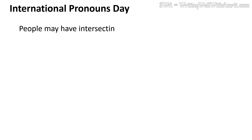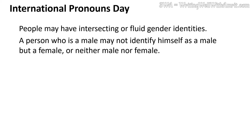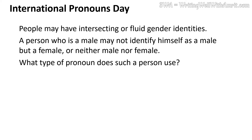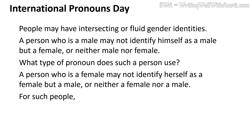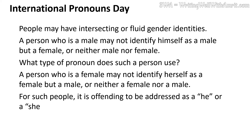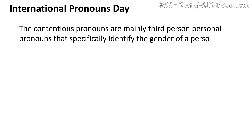People may have intersecting or fluid gender identities. A person who is a male may not identify himself as a male, but as a female, or neither a male nor a female. What type of pronoun does such a person use? A person who is a female may not identify herself as a female, but as a male, or neither. For such people, it is offensive to be addressed as 'he' or 'she' when they don't feel like he or she. The contentious pronouns are mainly third-person personal pronouns that specifically identify the gender of a person.